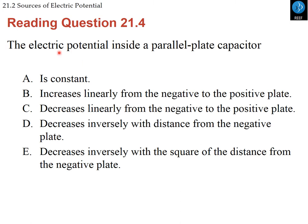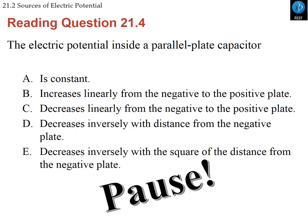The electric potential energy inside a parallel plate capacitor — remember we call a capacitor those two positive and negative plates that set up a uniform field. The question is: is the electric potential energy constant, does it increase linearly from the negative to positive plate, does it decrease linearly, or does it vary inversely with distance or with the square of the distance from the negative plate? Pause and think.